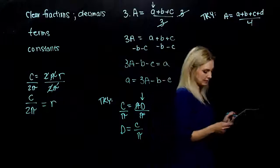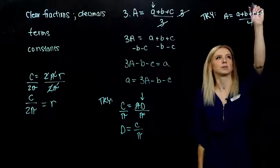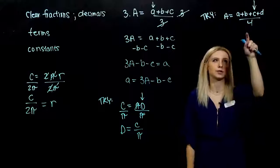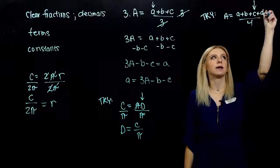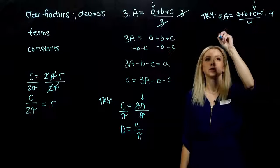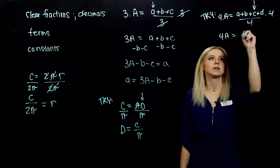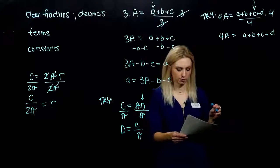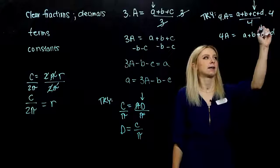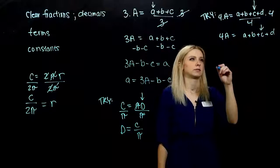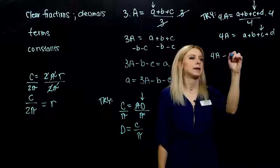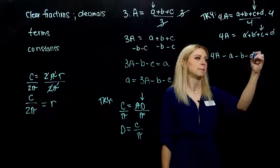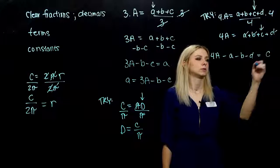And in the last one, you're asked to solve for little c. So again, first thing that needs to happen, we need to dig it out of that fraction. Multiply both sides by four. So I'm looking at four times the average is a plus b plus c plus d. We're trying to solve for c, that guy, so we need to subtract the rest. So I've got 4A minus little a, took care of him, minus b, took care of him, minus d equals little c.